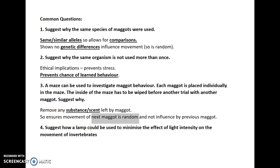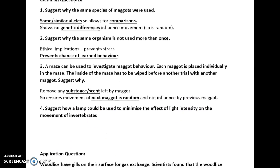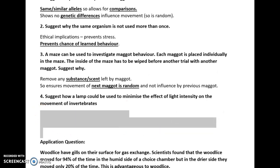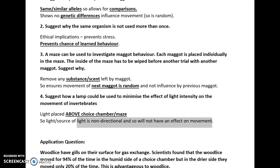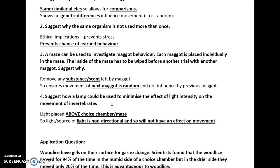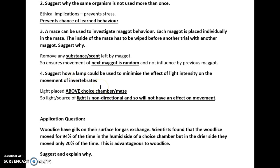Cleaning ensures that the next maggot's behaviour is still random and not influenced by the previous one. Another question asks how a lamp could be used to minimise the effect of light intensity on invertebrate movement. We can place the light above the choice chamber or maze so that the light is non-directional — distributed equally through all chambers — and therefore light will not have an effect on movement. This applies when light is a control variable in the investigation.